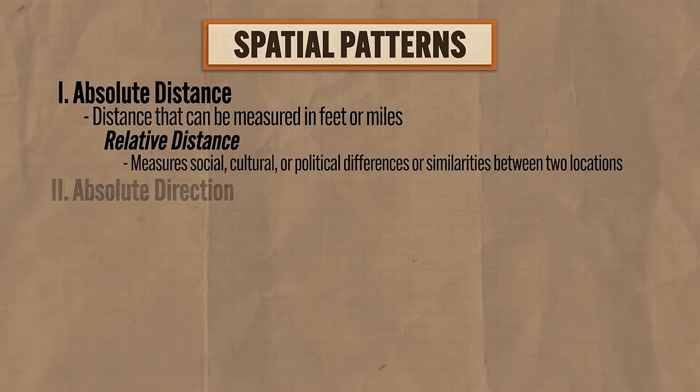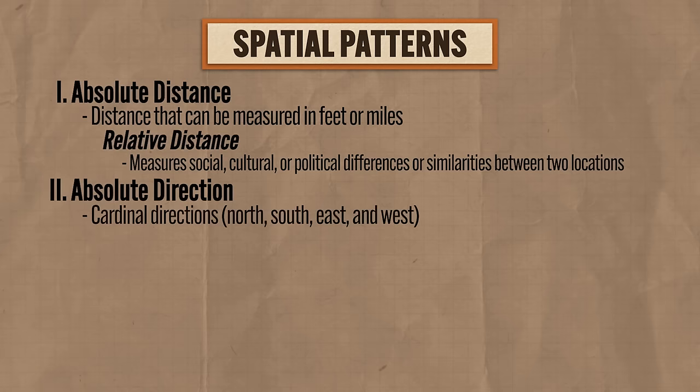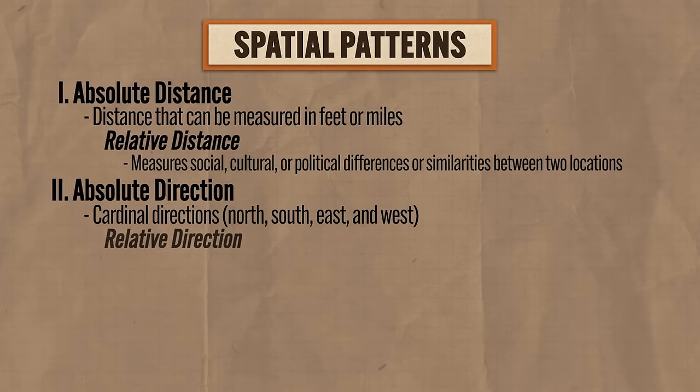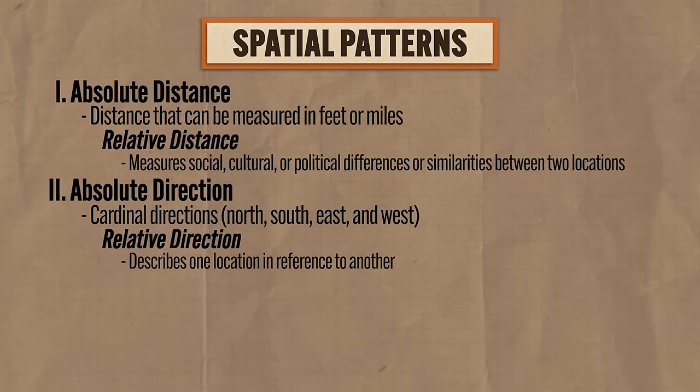The second kind of spatial pattern depicted on maps is absolute direction, which is essentially north, south, east, and west, also known as cardinal directions. But again, there is a related concept that cannot be depicted on maps, namely relative direction, which describes one location in reference to another. For example, if you're a freshman and you don't know your way around your school yet, maybe you need to ask your teacher for directions. If your teacher gives you absolute directions — go north by northwest for 32 paces and then east for 14 paces — well, you might as well drop out because you're never going to find that class.